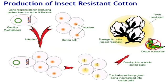This Bacillus thuringiensis bacteria produces proteins. These proteins are in the form of crystals. This protein has insecticidal property which kills the insect like cotton bollworm. The toxins produced by the crystal kills the cotton bollworm.